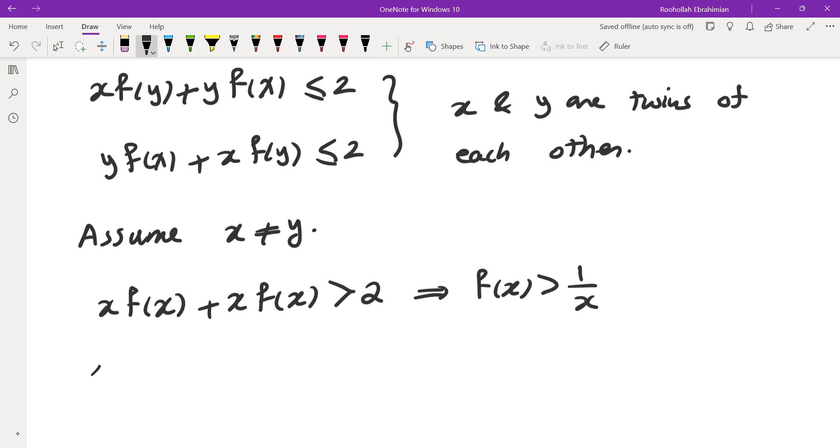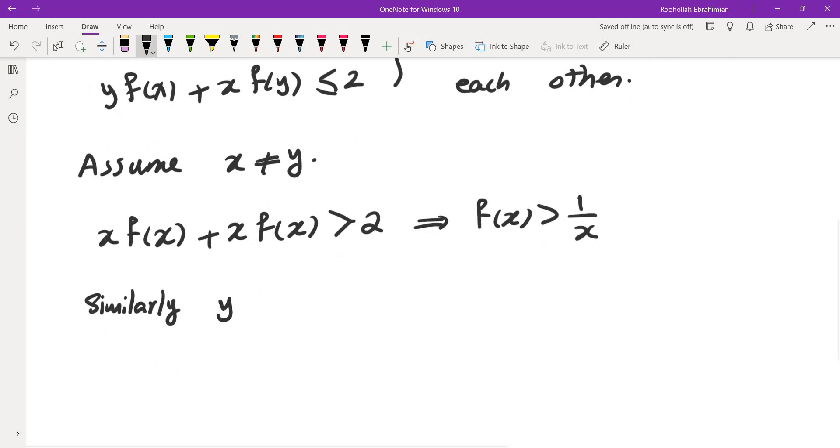Similarly, since y cannot be a twin of itself because twins are unique, so every element has only one twin, I could say that yf(y) plus yf(y) is greater than 2, which means f(y) is greater than 1 over y.